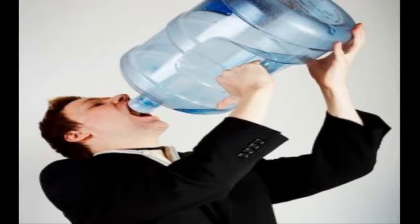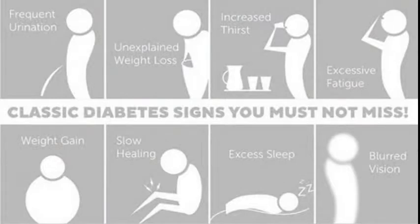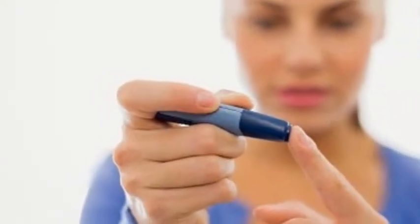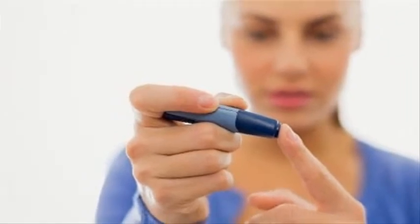Extreme thirst — not only after exercise or a stroll in the heat, but always — is a symptom. A dry mouth, frequent urination, unexpected weight loss, and feeling lethargic all the time are also warning signs — check with a doctor, as these could be symptoms of diabetes. Blurry vision, slow-healing cuts and sores, and extreme itching, soreness in the genital area, or yeast infections can be other symptoms.